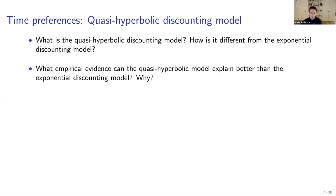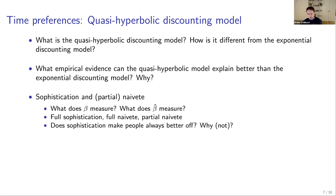One key assumption of exponential discounting is that there are no preference reversals. For the quasi-hyperbolic model, you need to know what sophistication, naivete, and partial naivete mean — what beta and beta-hat measure, what full sophistication, full naivete, and partial naivete are — and be able to answer questions such as whether sophistication always makes people better off, and why or why not.